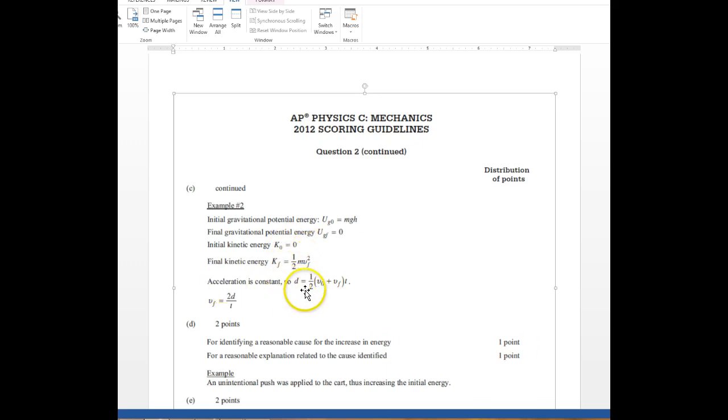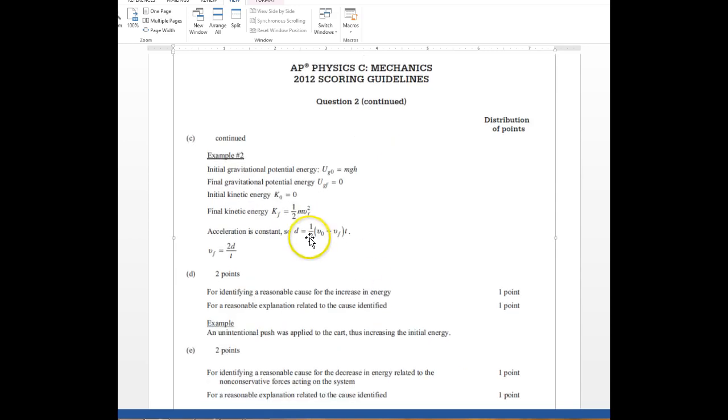Because acceleration is constant, we know we can use dy is equal to one-half gt squared. Some things kind of cross off there. So we're left with this equation, d is equal to one-half of the velocities times time. Because you're just doing average velocity. It makes it a lot easier.